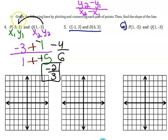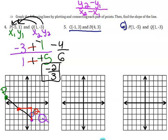The other way to do this is to graph the actual points. Plotting (negative five, one) and (1, negative three) on the graph, I connect them and find rise over run. I rose two and ran three to the left, so that's negative two thirds — the negative applies to the entire fraction. Both methods give the same answer.